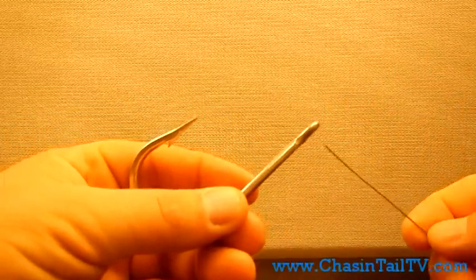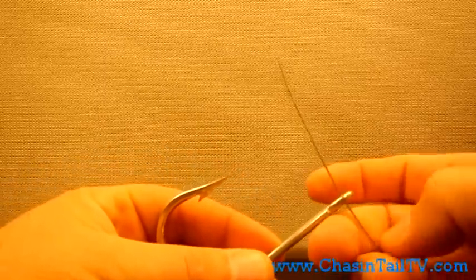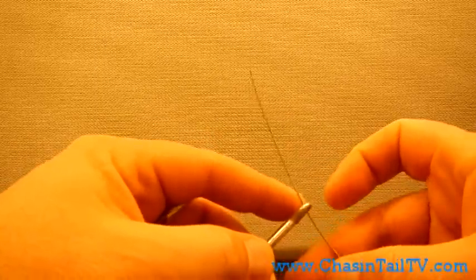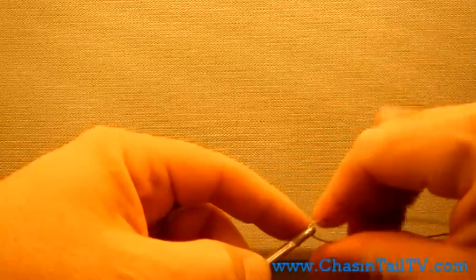All right, so today I'm going to show you guys how to do a haywire twist using a 10.0 shock hook. My wire I'm using is a single strand 240 pound test.